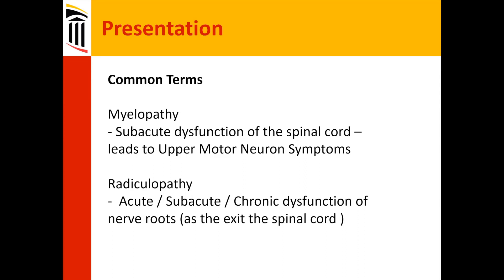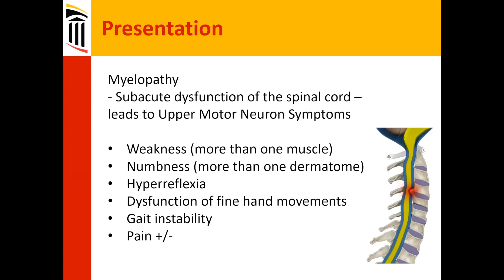Radiculopathy gets noticed quickly — somebody has a sharp pain running down their arm to their fingers or thumb. But in the neurosurgical world it tends to be a less severe injury than when the cord itself is injured, which can be very insidious in onset. For myelopathy, there's weakness in more than one muscle group and numbness across more than one dermatome, due to the nature of the cord injury.